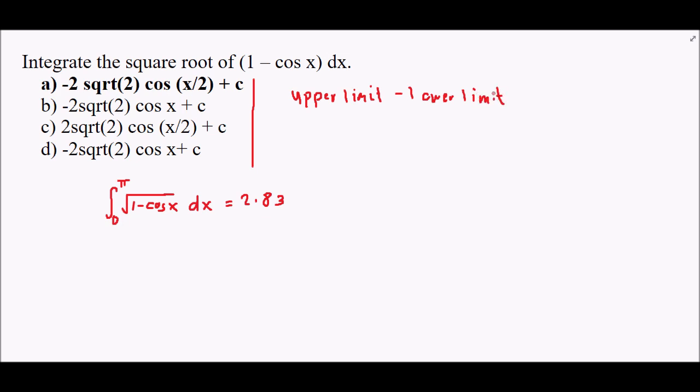Let's substitute our values. We have -2√2 cos(x/2). We will substitute the upper limit, which is π, minus (-2√2).